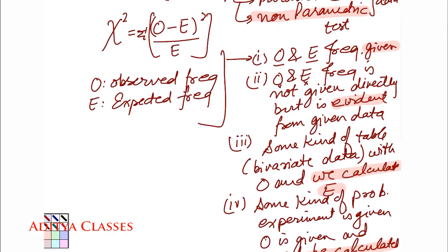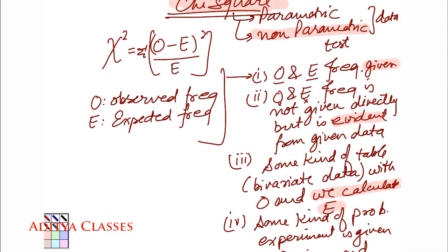And as far as formula is concerned, in each of these first, second, third or fourth case, formula will be limited to this. This is the only formula that we will be making use of to find out chi-square value.